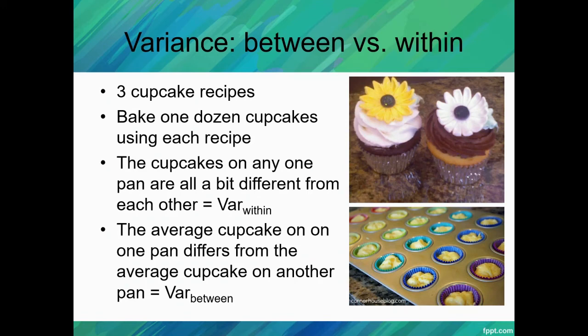These are the two things that an ANOVA looks at. It takes the variation between, or the variance between, and divides it by the variance within. The result of that is our F-statistic. If our F-statistic is significant, we know that there's a difference somewhere.